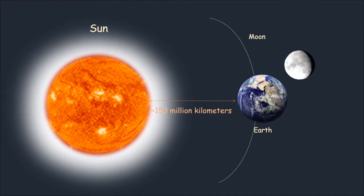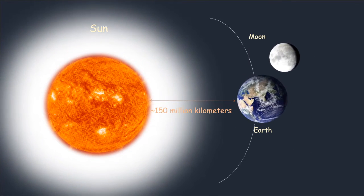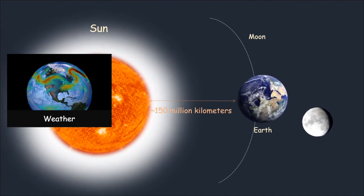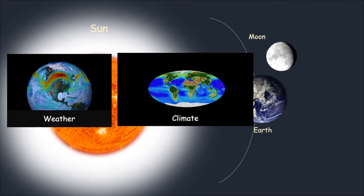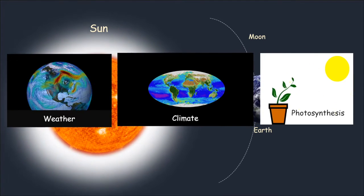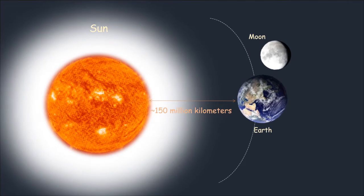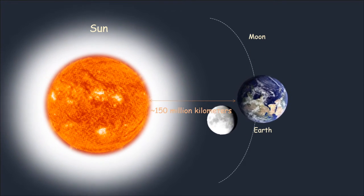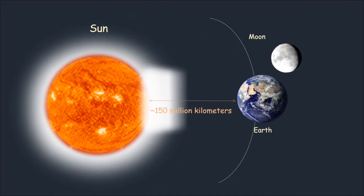The sun has extremely important influences on our planet. It drives weather, ocean currents, seasons, and climate, and makes plant life possible through photosynthesis. Without the sun's heat and light, life on Earth would not exist.